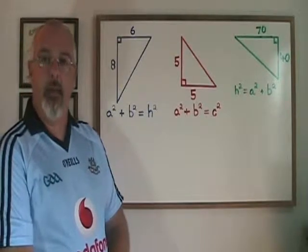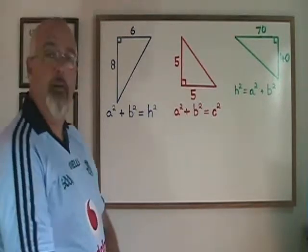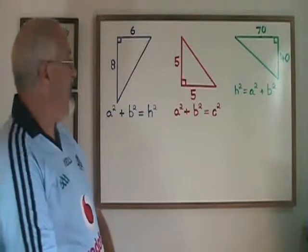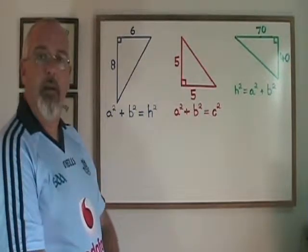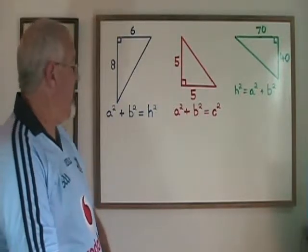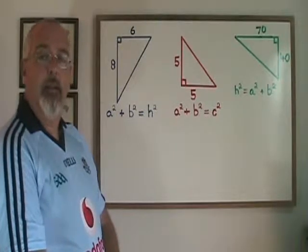Using Pythagoras' theorem to find the length of a hypotenuse of a right triangle is a matter of plugging the shortest side and the medium length side into the formula and solving for h.